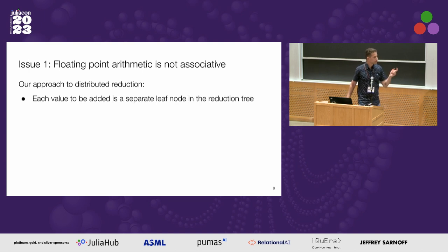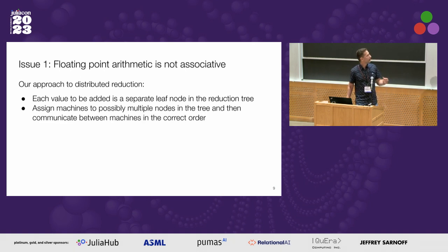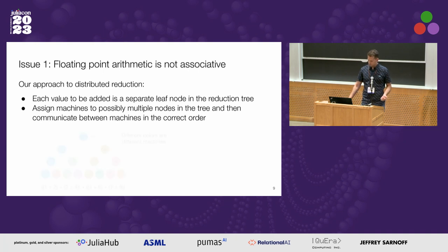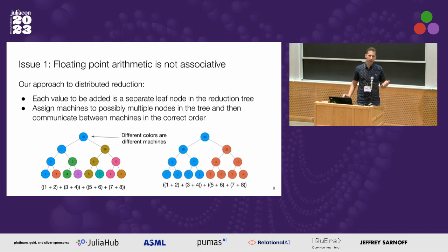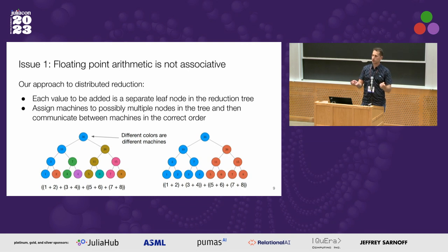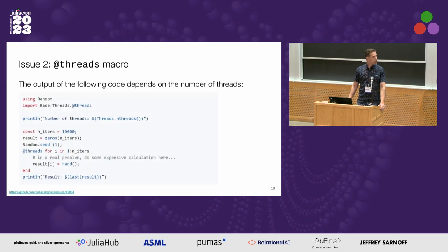Our solution is to have each value that we need to perform an operation on be a separate leaf node in a reduction tree, and then assign the machines to the nodes of that tree to ensure operations occur in exactly the same order. Using colors to indicate machines: even if we have two machines (blue and red), we perform the same order of operations as if there were eight machines. The blue machine essentially communicates with itself as if eight machines were present, preserving the same order of operations.